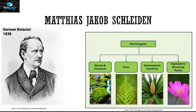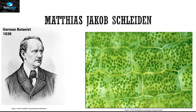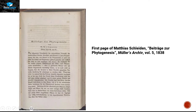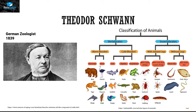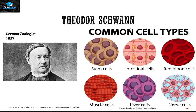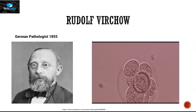In 1838, German botanist Matthias Jakob Schleiden was working on different types of plants and concluded that all plants are made up of cells, which he wrote in Beiträge zur Phytogenesis in 1838. The very next year, German zoologist Theodor Schwann was working on different types of animals and deduced the same conclusion — that all animals are made up of cells.